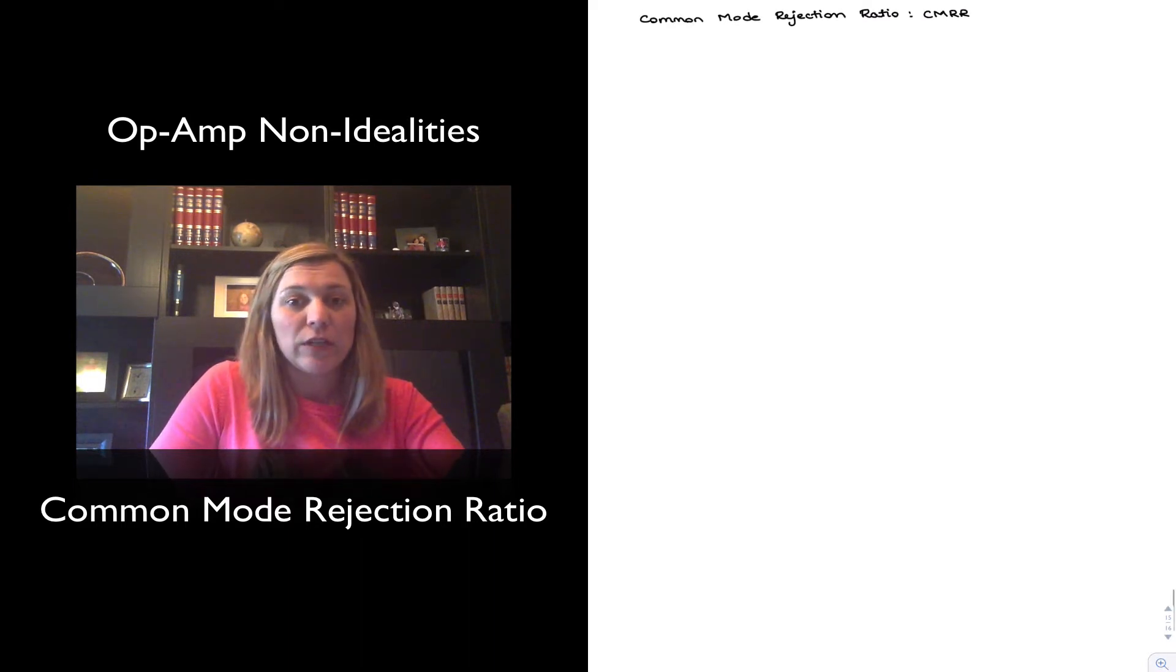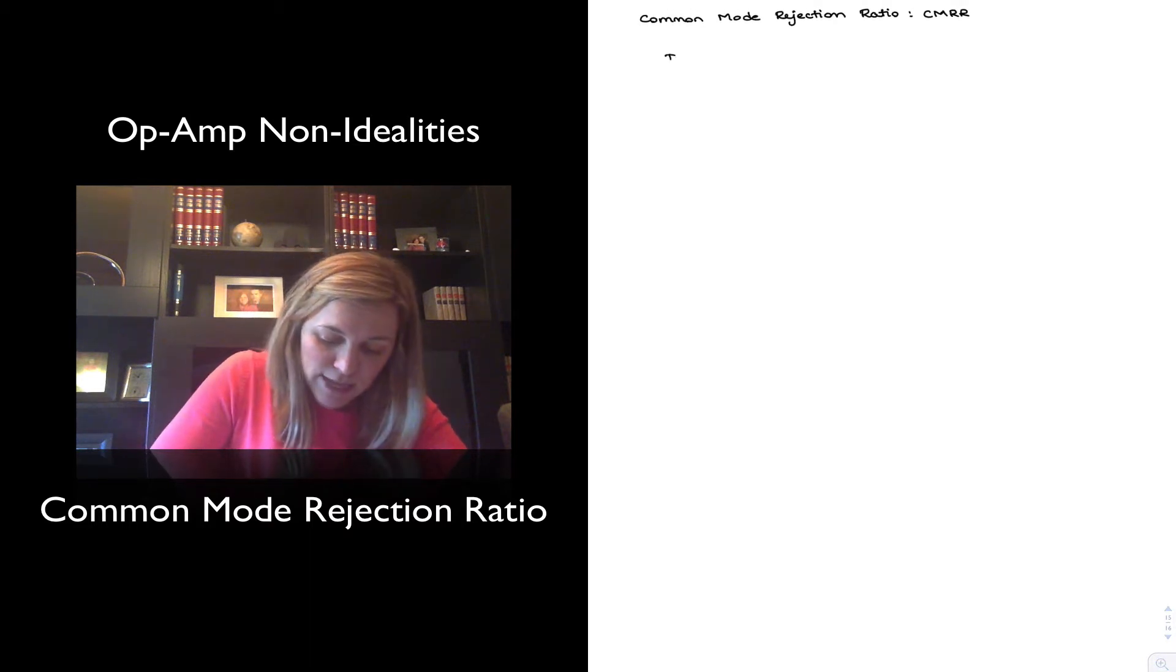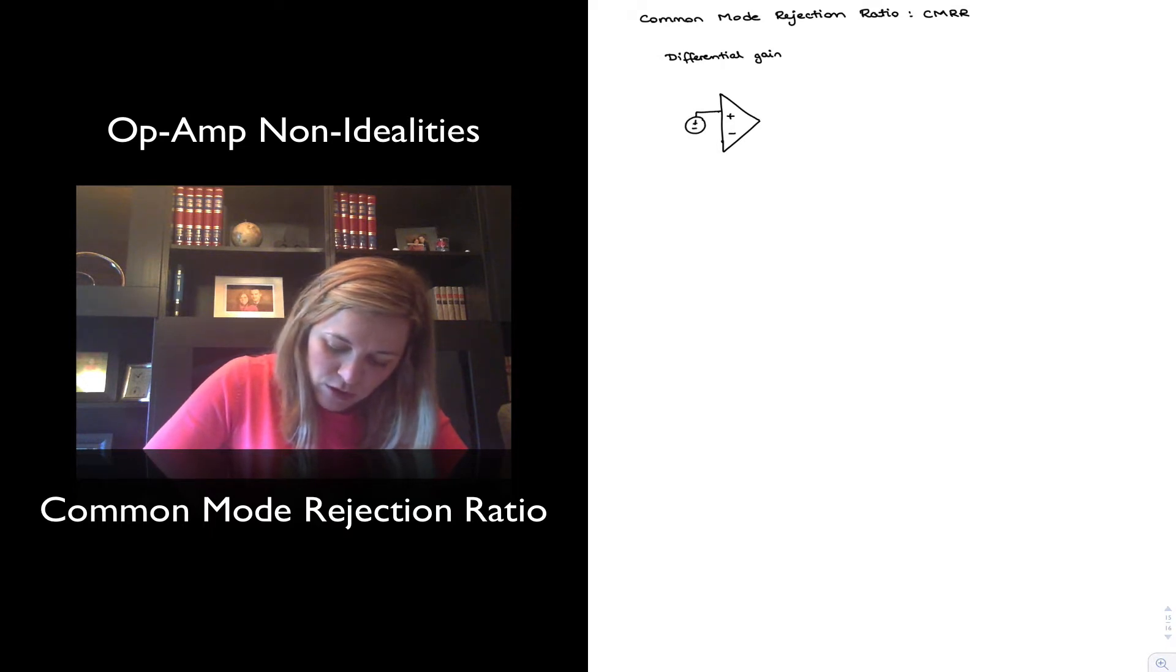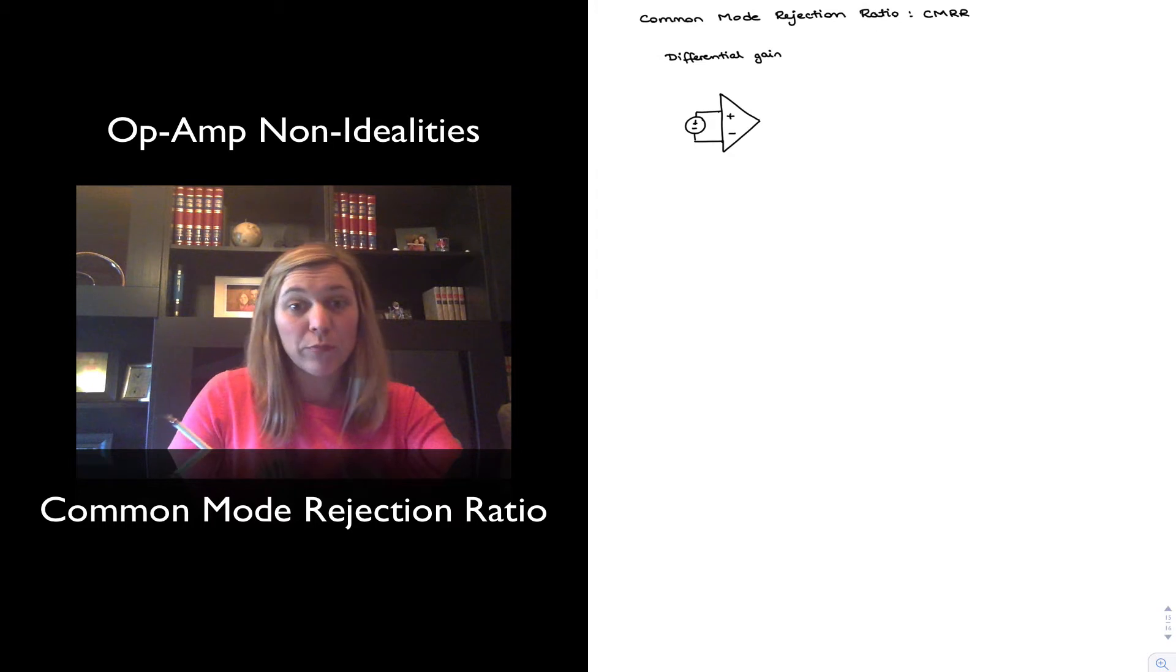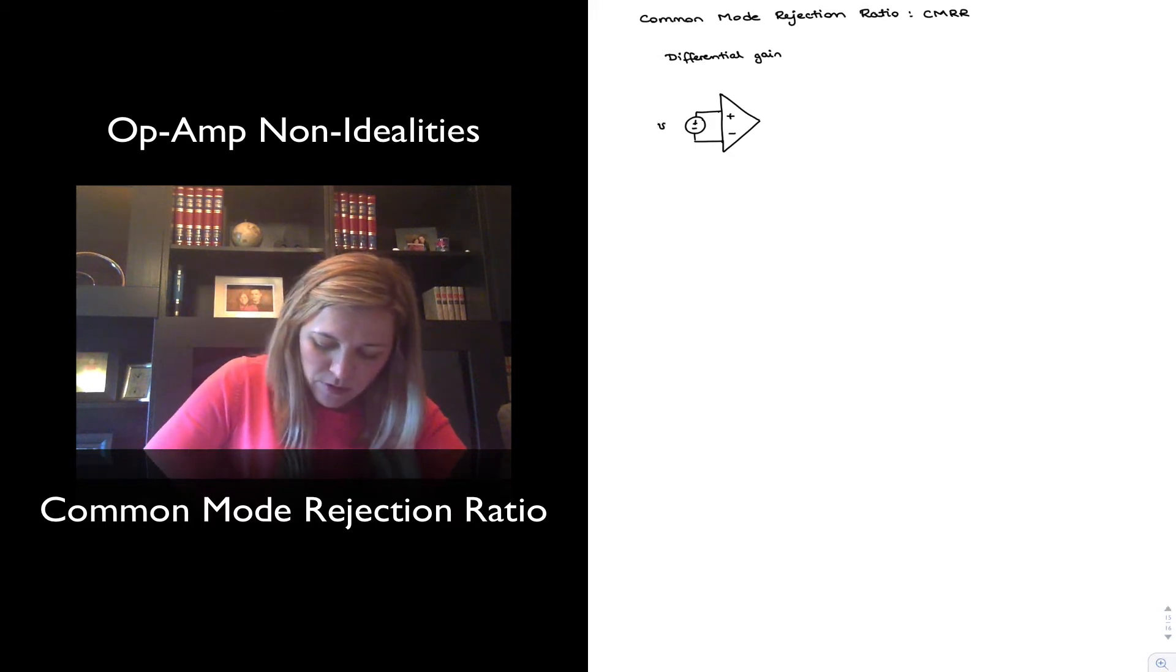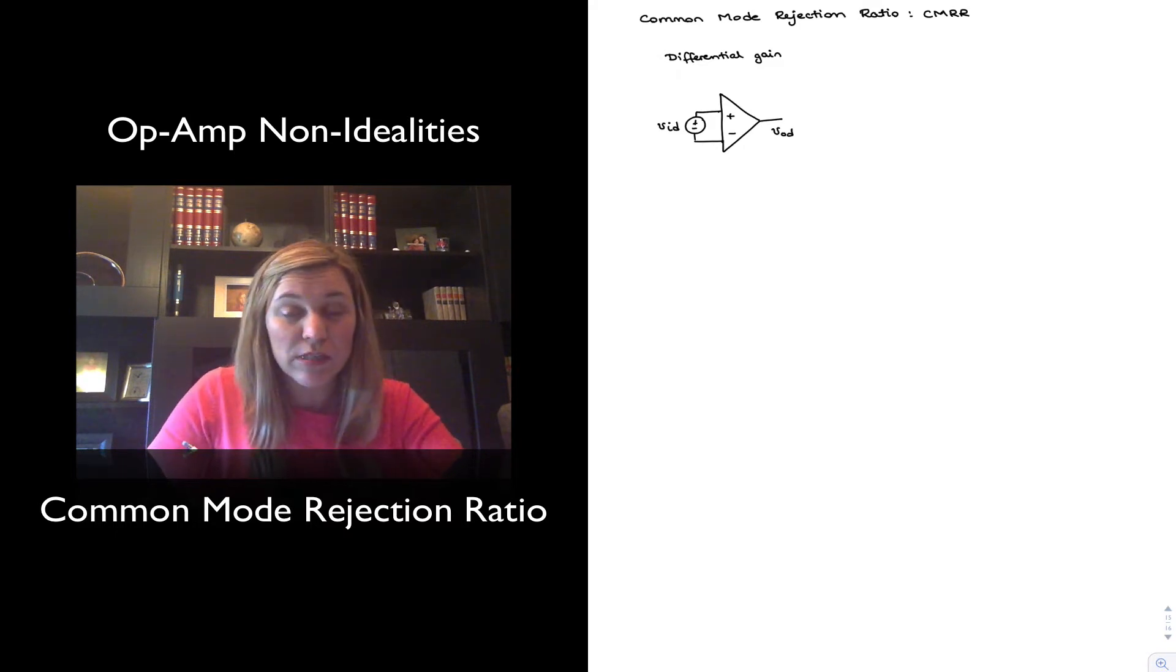When we have an amplifier, we can talk about two types of gains. We can talk about the differential gain. So we can depict an op-amp, and if we apply a differential gain between a voltage between or across the two input terminals, we can refer to it as VID, or input voltage differential, we expect to get an output via AUD in response to the differential input signal.